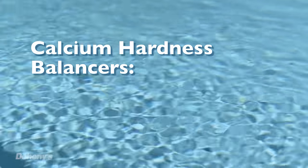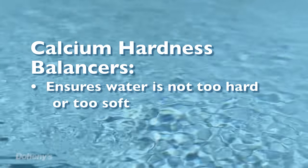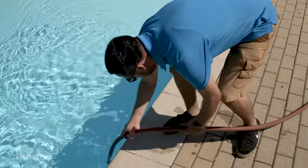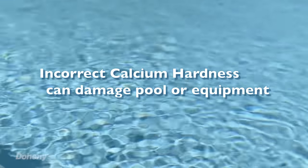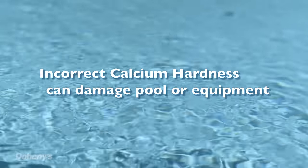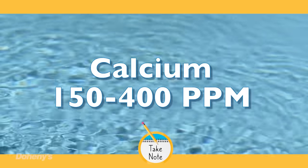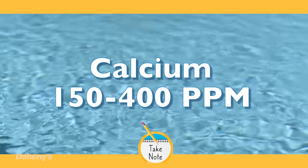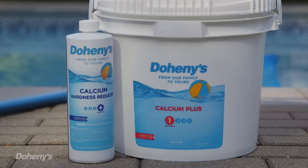Another common balancer is calcium hardness control. Calcium hardness is the measure used to determine the amount of dissolved calcium and magnesium in your swimming pool — basically, it tells you the hardness or softness of your water. For pools filled or topped off with well water, it's even more important to keep an eye on calcium hardness, as well water tends to have higher levels of these chemicals. Just like pH and total alkalinity, it's important to keep calcium hardness balanced to prevent damage to your pool or equipment. If your calcium hardness drops below 150 parts per million it becomes corrosive, and if it exceeds 400 parts per million your water can become cloudy and cause scaling. Doheny's calcium hardness reducer and increaser will help you keep your levels exactly where they need to be.